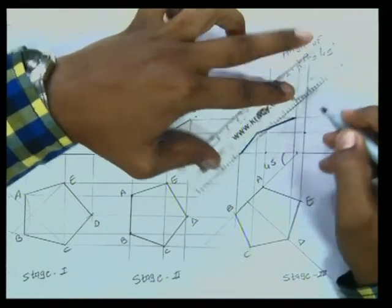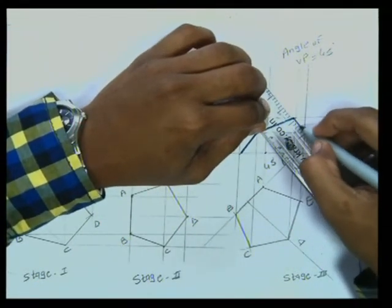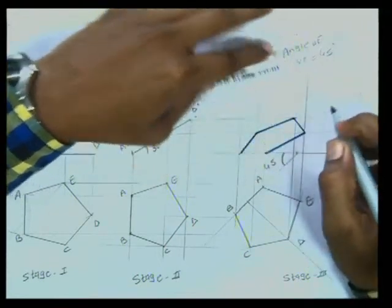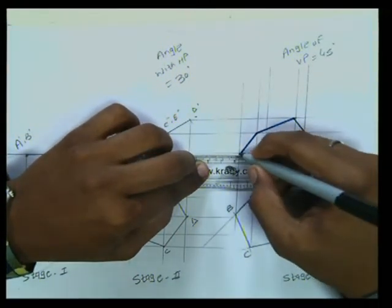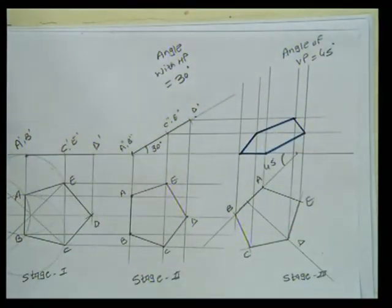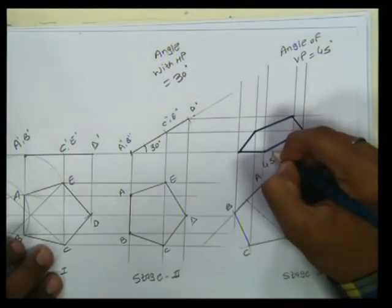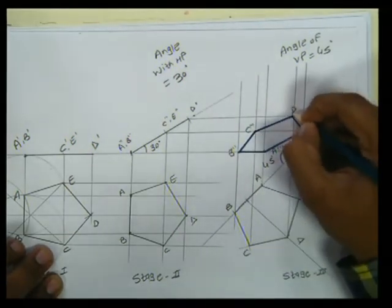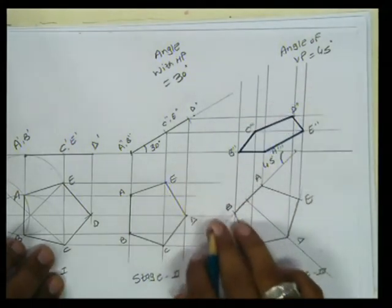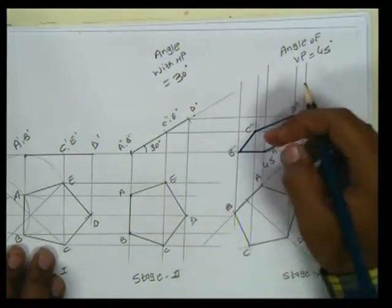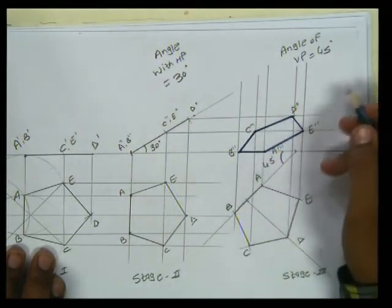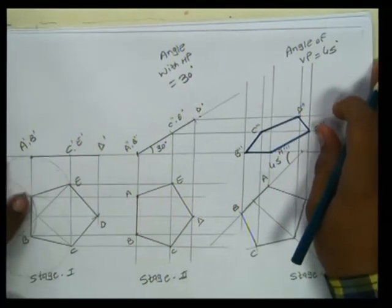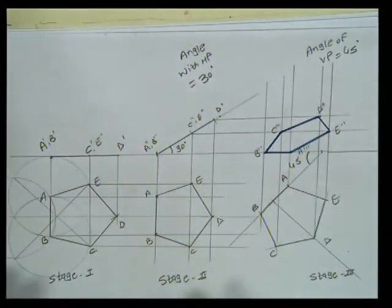When a thin pentagonal plate is 30 degrees to the HP and 45 degrees to the VP, it will look like this. This is our final output. This is A-triple-dash, B-triple-dash, C-triple-dash, D-triple-dash, and E-triple-dash. Make sure that you are connecting respective lines only: B connects to B, A to A, C to C, E to E, and D to D. This is how you complete Stage 3 of the projections of a plane.